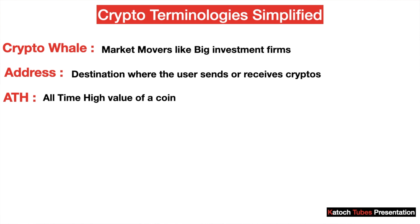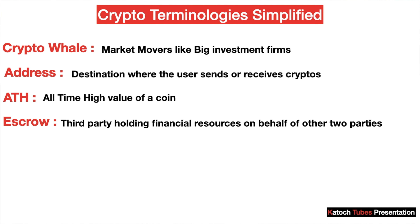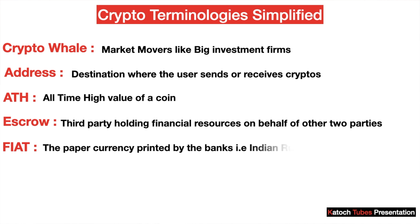Next is escrow. Escrow is one of the important terms you will come across. Escrow means when a third party holds financial resources on behalf of the other two parties. Fiat is your money — Indian rupee, US dollar — anything which is printed by the government or banks, or a legal tender, is called fiat. It is your paper currency. FOMO means fear of missing out.